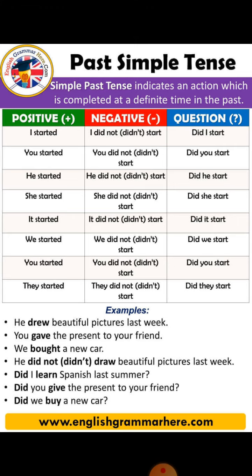In negative and interrogative, after 'did' we always apply the first form of verb. Negative: I did not start. Did I start? You started, you did not start. Did you start? He started, he did not start. Did he start?